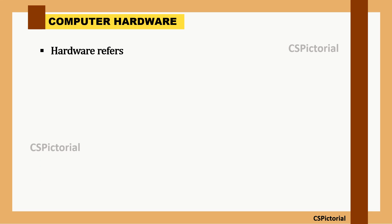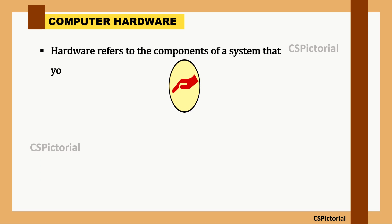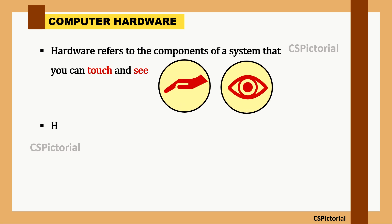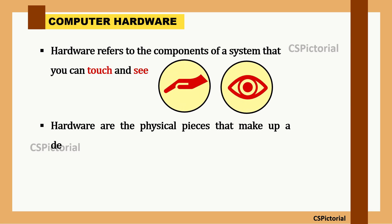Hardware refers to the components of a system that you can touch and see. They are the physical pieces that make up the device. The device could be a computer, a phone, or any other machine. The physical components of that device are called its hardware.